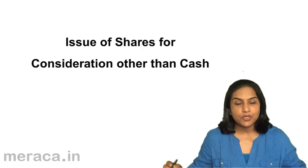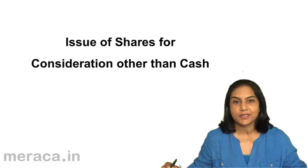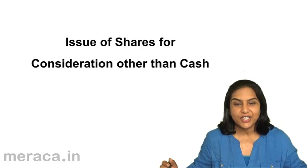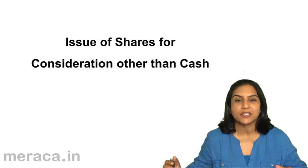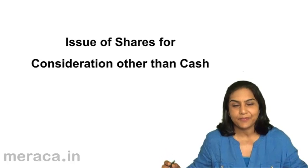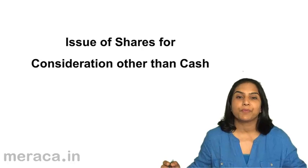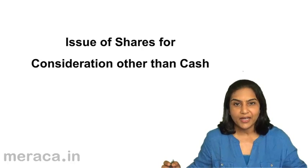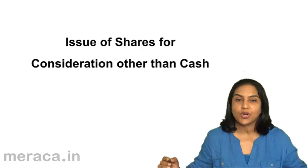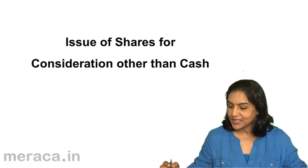But suppose a company were to issue shares but does not get cash — instead gets, let's say, plant and machinery, furniture, or some other assets. What would be the accounting entries? How is it shown in the balance sheet? This is what we will discuss now.